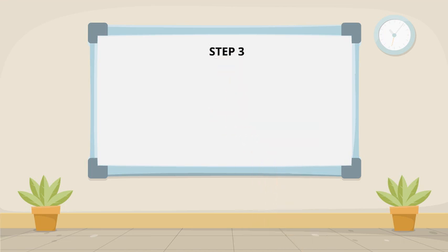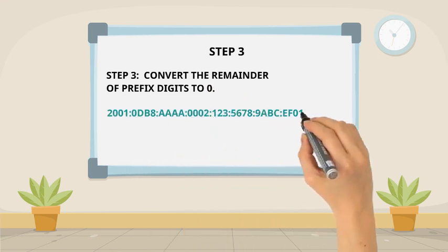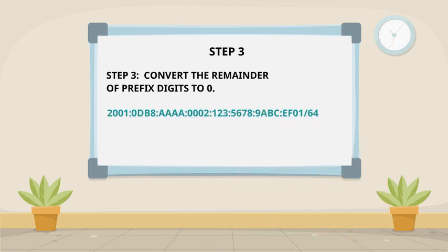Step three. Now we will take the remaining digits from our address and convert them to zeros and add them to the end of our first 16 digits.